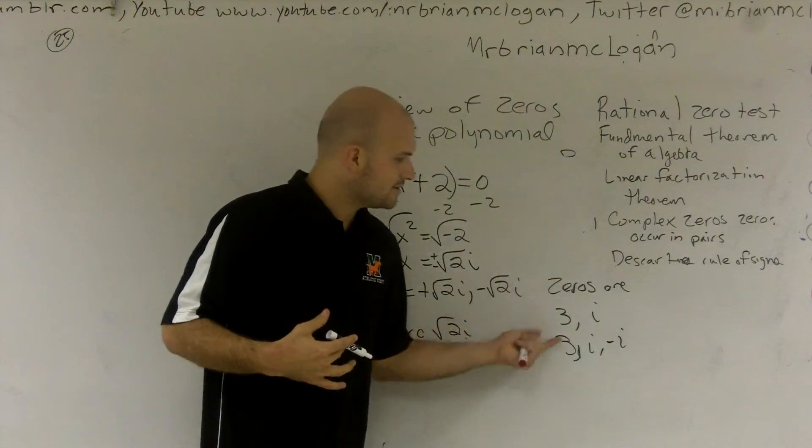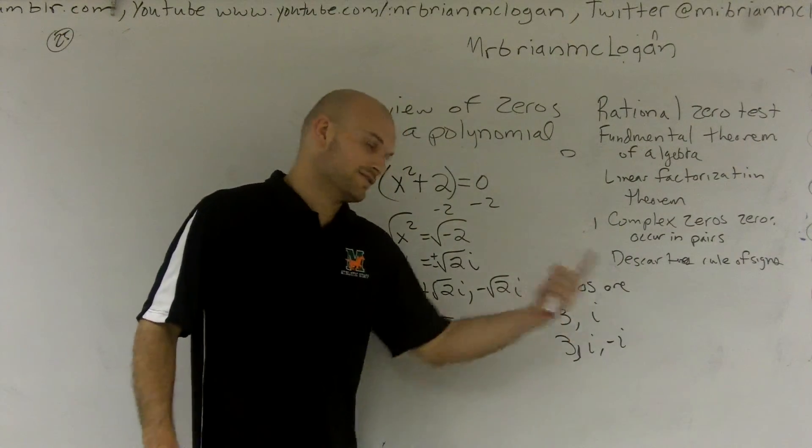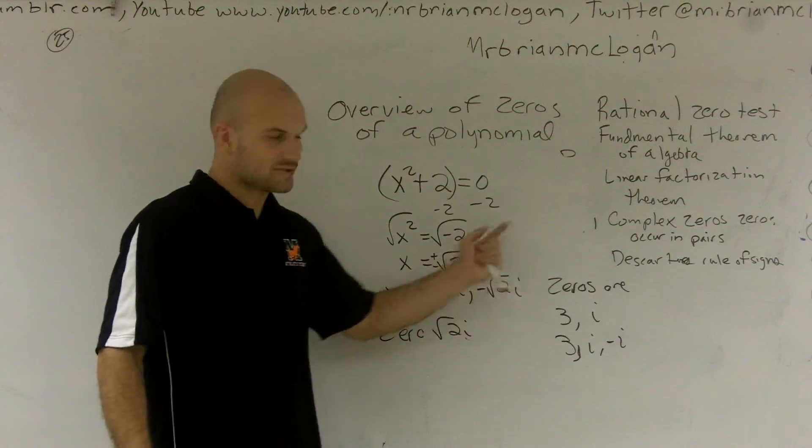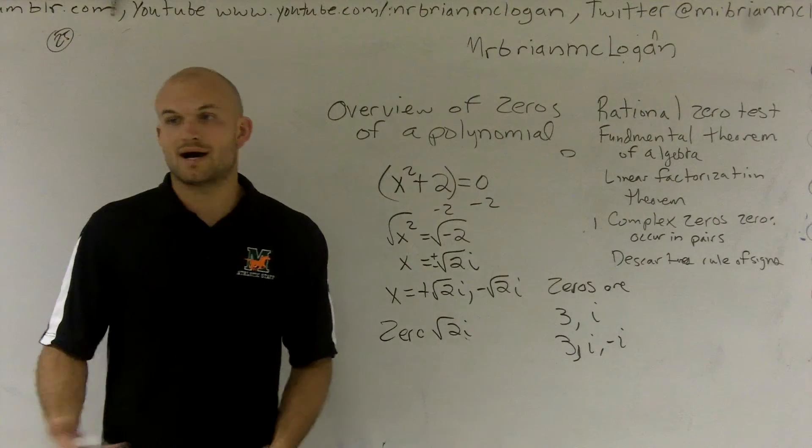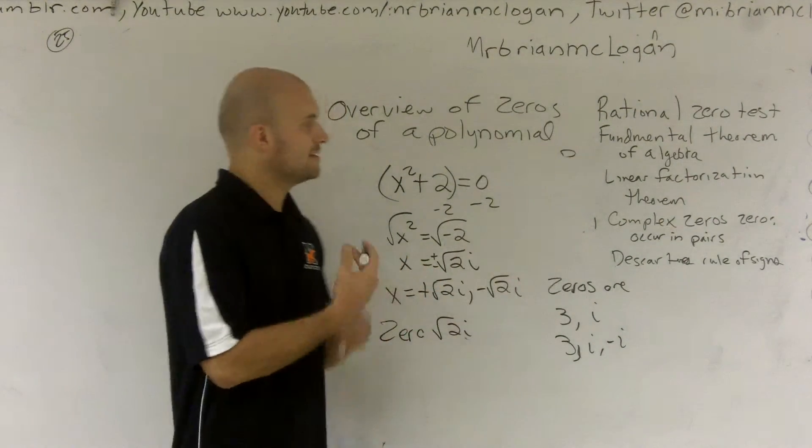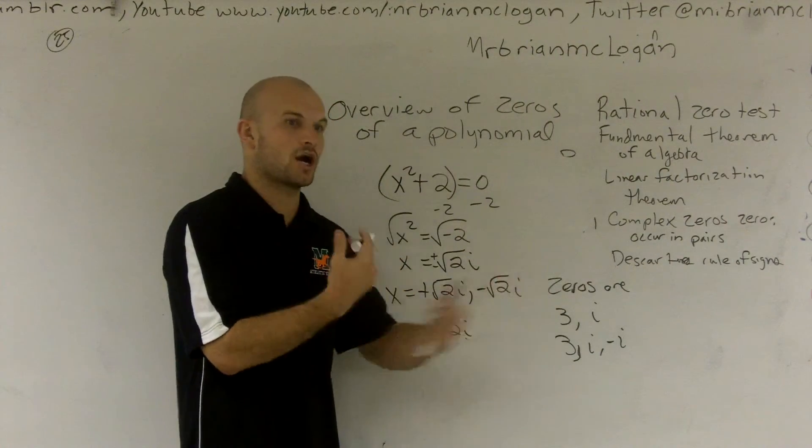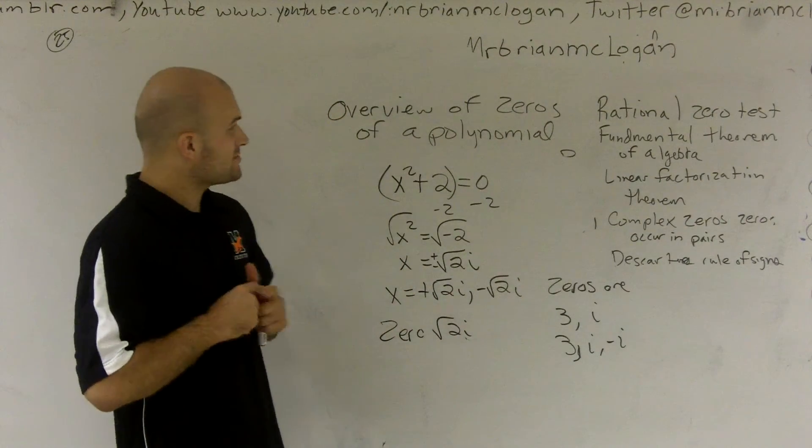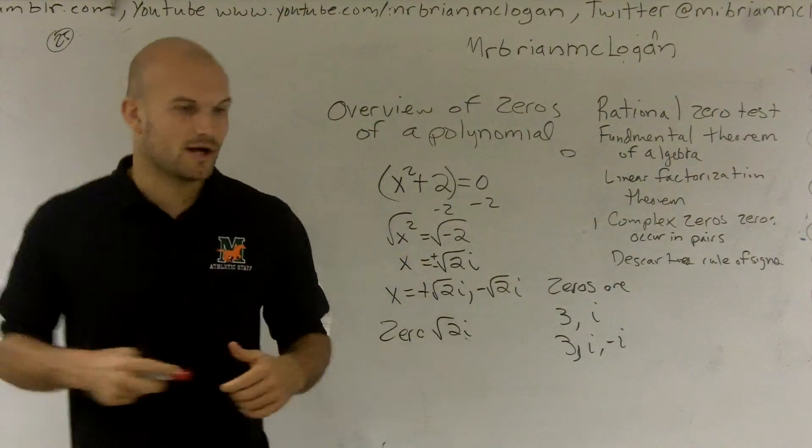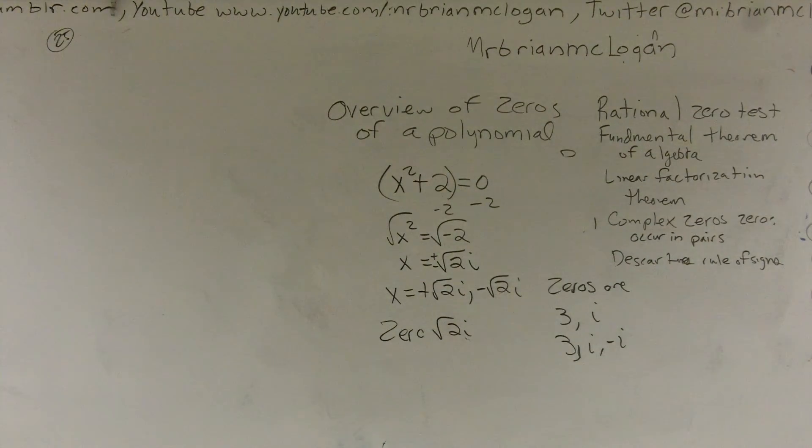It's always going to be - you need to make sure that you're including your i and your -i. √(2i), -√(2i). 3 + 2i, 3 - 2i. Remember, it's always your complex number and its conjugate are always going to be zeros in there. And that's really about an overview of your zeros of polynomials that I want to go for now. Thank you.